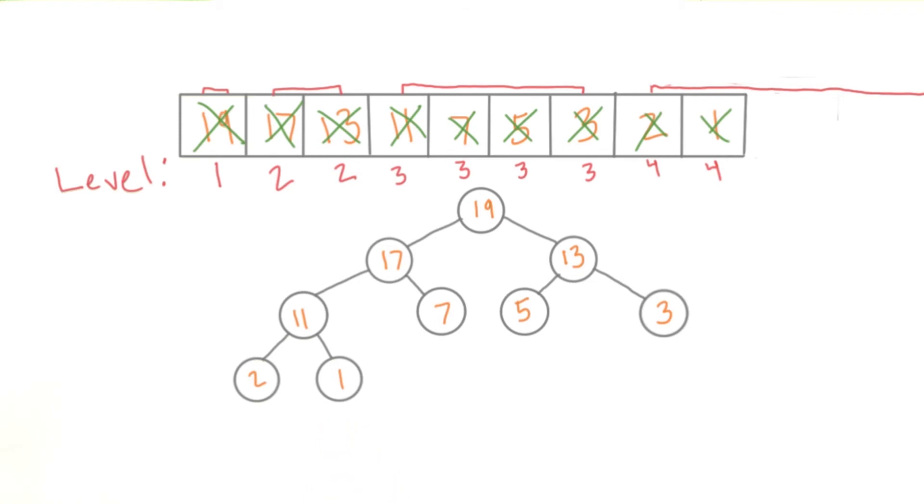Just a quick note, not every array can be represented as a heap. This one could because it was sorted in descending order. In general, the numbers need to be in an order that will make sense on a heap.